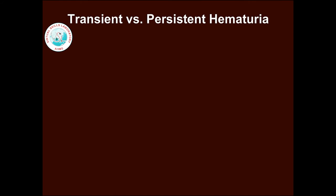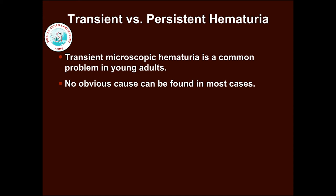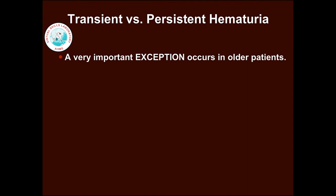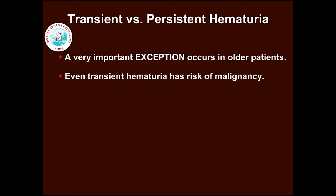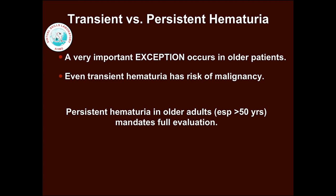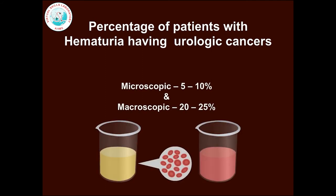It is important to document transient versus persistent hematuria. Transient microscopic hematuria is a common problem in young adults and no obvious cause can be found in most cases. Low-level hematuria in the absence of other signs or symptoms does not require immediate diagnosis; it would be reasonable to repeat urinalysis in a few days. A very important exception occurs in older patients, where even transient hematuria carries a risk of malignancy. Around 5-10% of cases presenting with microscopic hematuria will have an underlying urologic cancer, compared to 20-25% of cases of macroscopic hematuria.